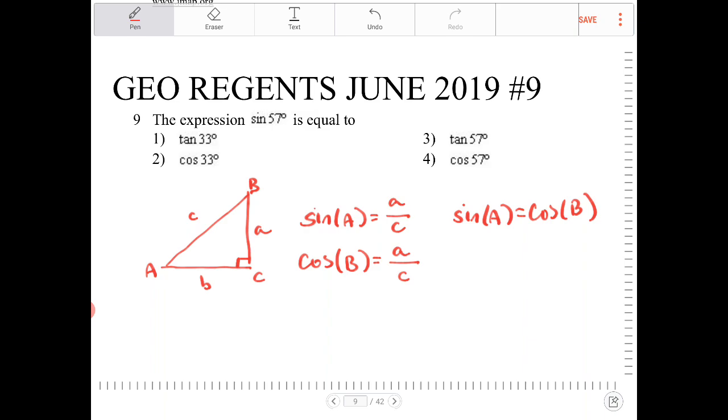So what's the relationship between A and B then? A and B, as it turns out, they're complementary, right? So A plus B must add up to 90, right?